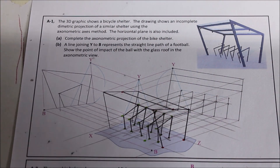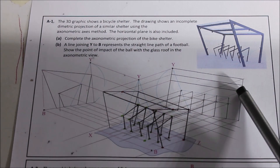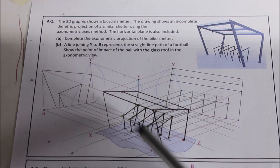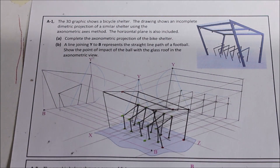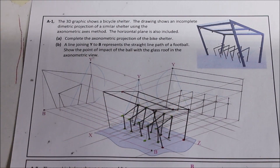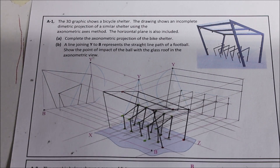So that is Part A finished and drawn in strong. It's a bit of an awkward one because it is basically a line diagram — there's no thickness to either the racks or the structure, and there's not really much to figure out about what you can see because they're all just line diagrams, so it's a bit messy. But that is Part A done. Now we're moving on to Part B: a line joining Y to B represents a straight line path of the football. Find Y, find B — we have B and Y here in the end view, and the elevation levels of Y and B in the axiometric.